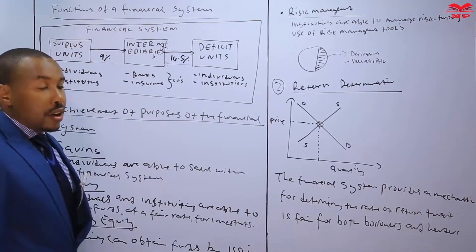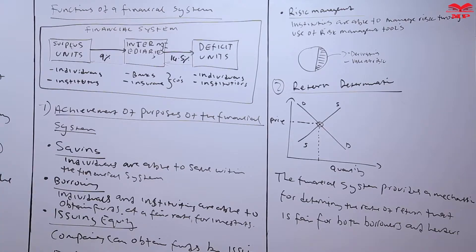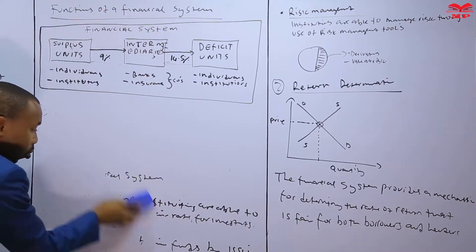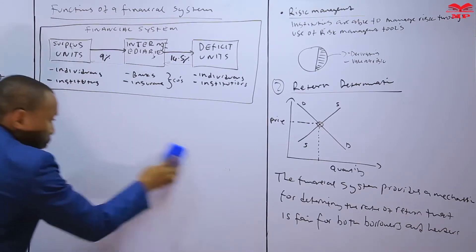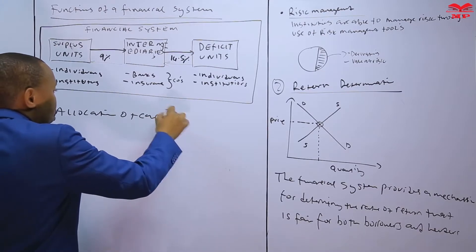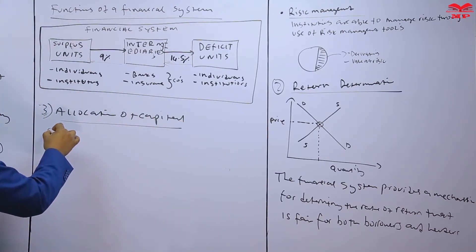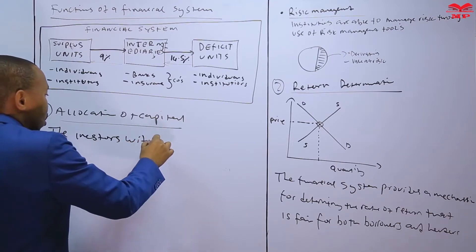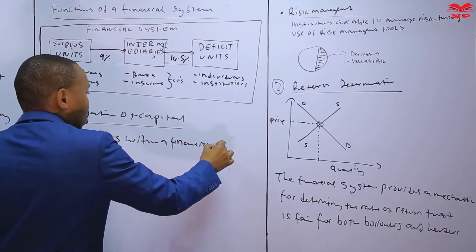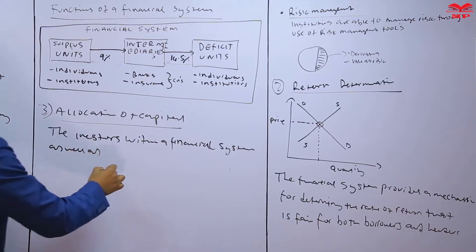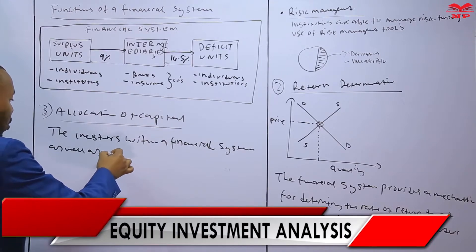The third function is the allocation of capital. The financial system creates a mechanism so that funds can be allocated to their most efficient users. Investors, providers, and portfolio managers direct funds to users in order to obtain a favorable rate of return.